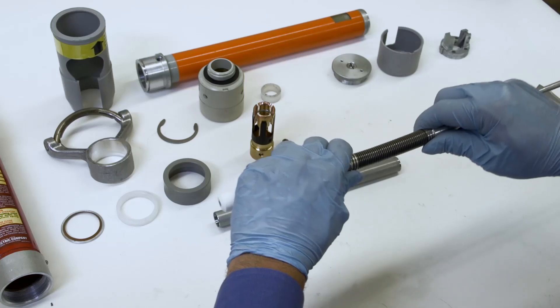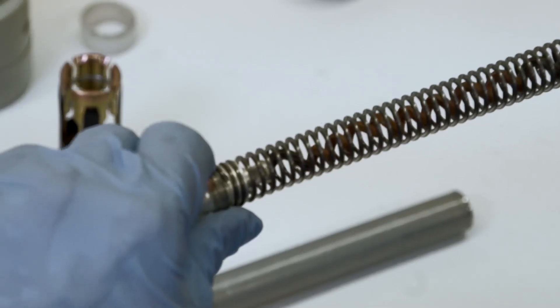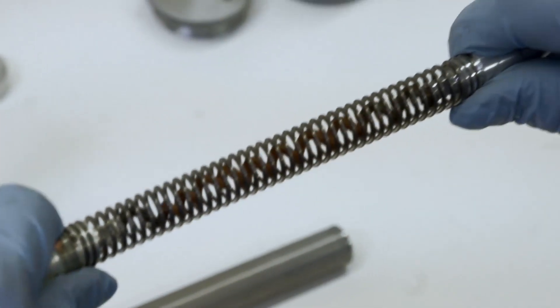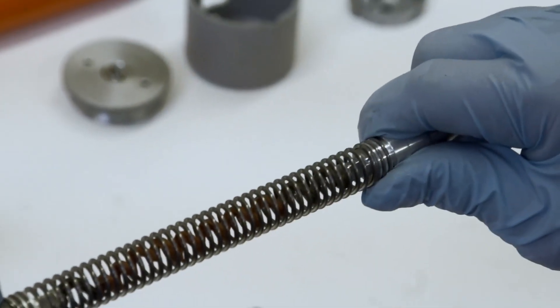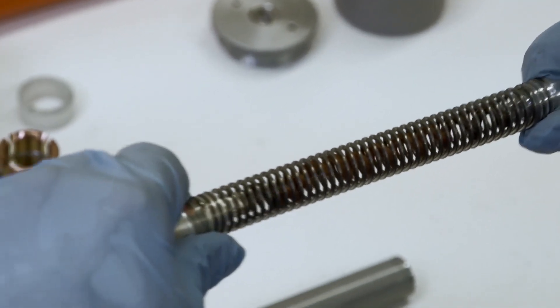Then pull both ends of the assembly to extend the spring. Examine the flexible cable inside the spring for signs of wear or fraying. Make sure it is securely connected at both ends.